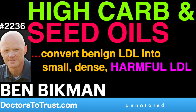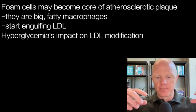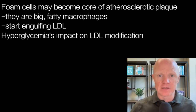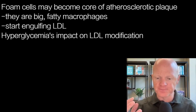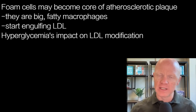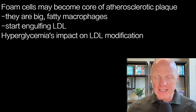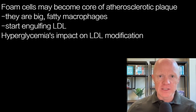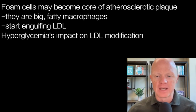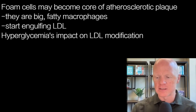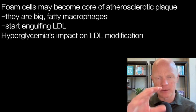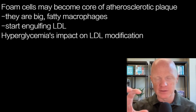The foam cell represents the fundamental core of the atherosclerotic plaque. If you look at a plaque growing within the wall of the blood vessel, it's really the foam cells that are the main body of it — these big, fatty macrophages. The foam cell starts engulfing LDL lipoproteins, and when you look at it under a microscope, it looks like it has little bubbles or appears foamy. Those are actually fatty bubbles, not air bubbles.